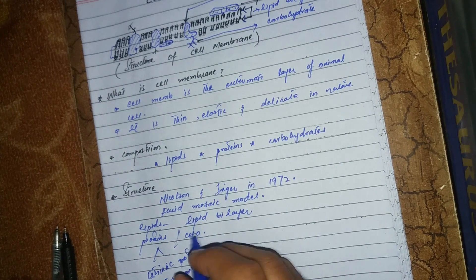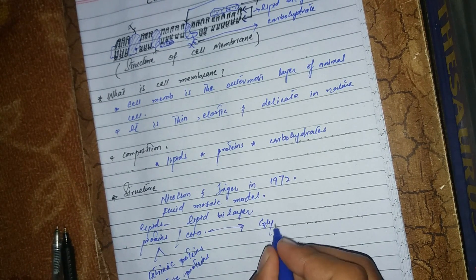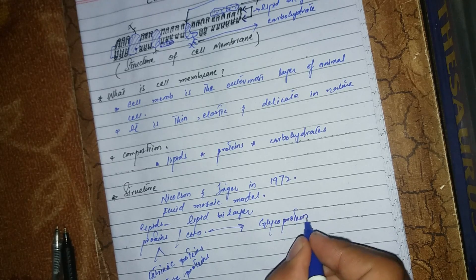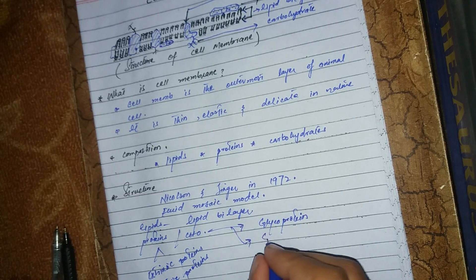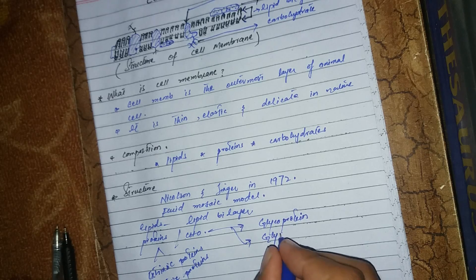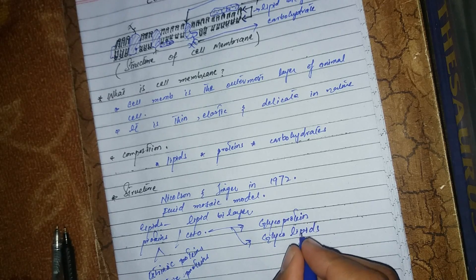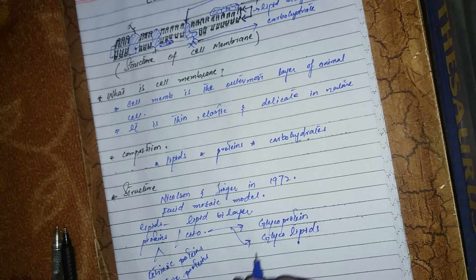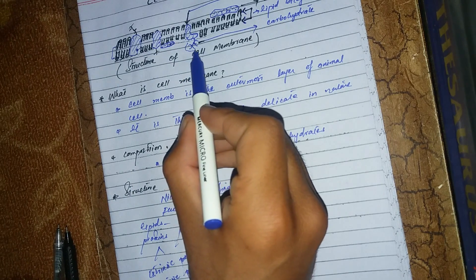Carbohydrates are of two types: glycoproteins, which are in combination with proteins, or glycolipids, which are in combination with lipids.